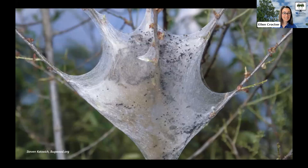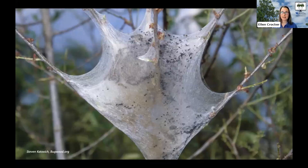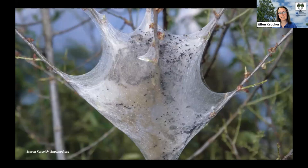Those tents protect the caterpillars both from anything that's trying to eat them, but also by creating the right conditions for them. Eastern tent caterpillars are one of the first things to emerge in the spring, right when those leaves start coming out, and it's pretty cold then. Those tents create the right moisture conditions and warmth needed for those caterpillars to develop.